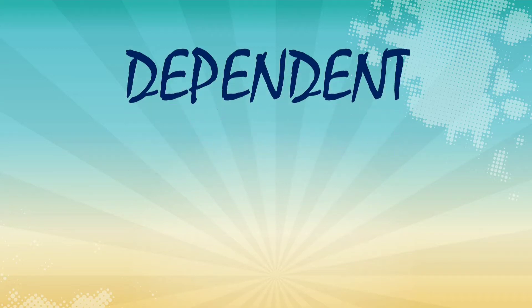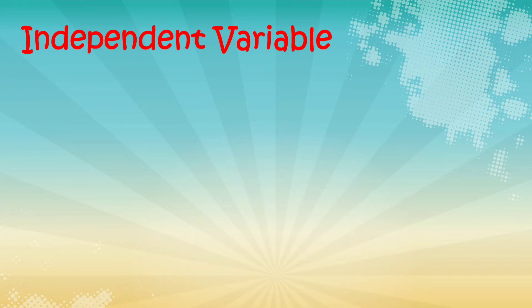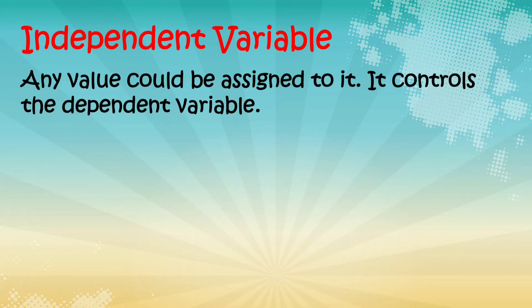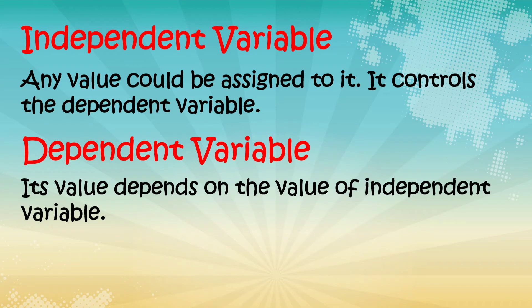So ang lesson natin sa araw na ito ay dependent and independent variables. I-define natin silang dalawa at ang kanilang pinagkaiba. So independent variable — any value could be assigned to it; it controls the dependent variable. Ang dependent variable naman, its value depends on the value of the independent variable.